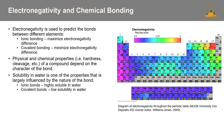The first topic is electronegativity — a word you'll likely know but may not recall why it's important in the context of geochemistry. It's used to predict bonds between different elements, whereby ionic bonding has high electronegativity difference and covalent bonding minimizes the electronegativity difference. Physical and chemical properties, including hardness and cleavage of a compound, depend on electronegativity, and the solubility in water is largely influenced by the nature of the bond, whereby ionic bonds are highly soluble in water and covalent bonds have low solubility.